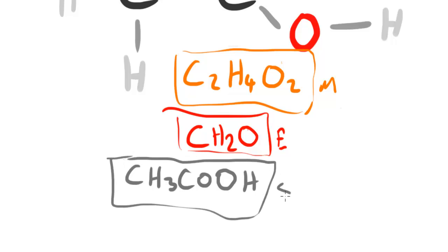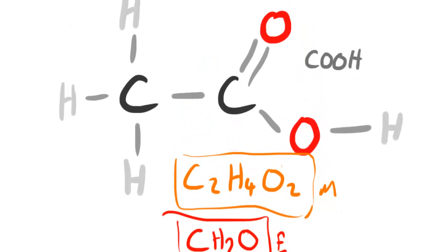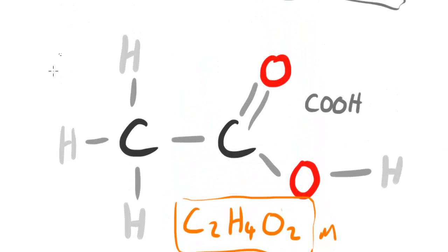The structural formula is CH3COOH, and as I said, what we can see drawn out is the displayed formula, since we can see all of the single bonds, double bonds, and all of the atoms present. So those are the first four types of formulas. In the next video we'll be taking a look at the other two types of formulas.